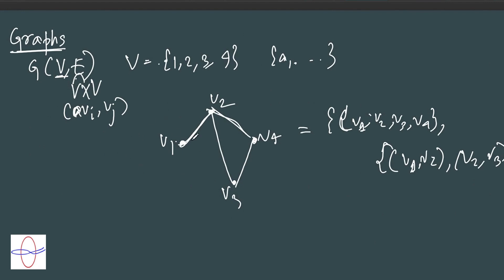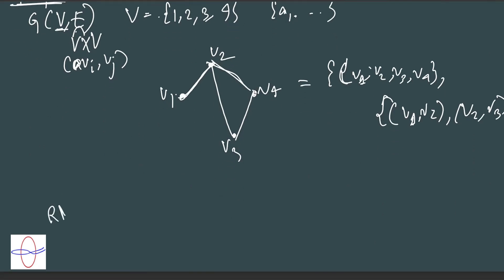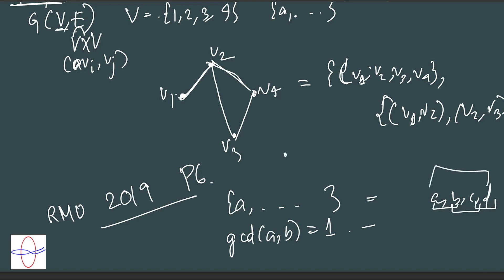For example, I don't know how many of you remember the problem from RMO 2019. It was B6. We had a set of numbers of a certain size. We were trying to talk about how some pairs were coprime - basically gcd(A,B) equals 1. We had data about how many pairs of these numbers were coprime. We had to show that we could find A, B, C, D element of this set so that they were all mutually coprime.